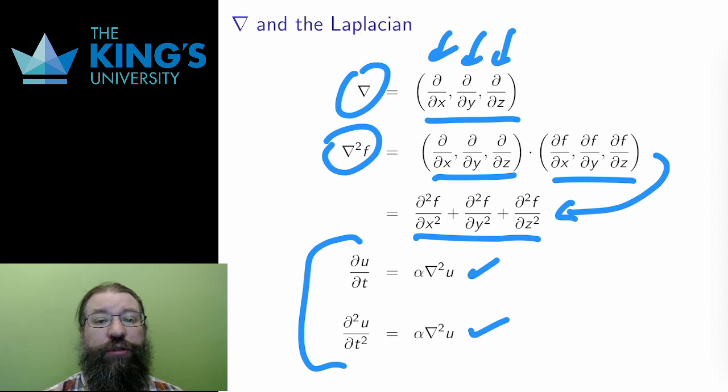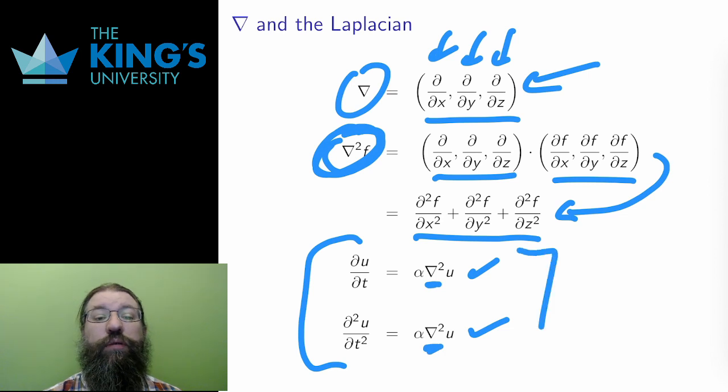I don't need you to immediately understand this, since this is not a course on differential equations, but I wanted to make this connection between the gradient construction, this vector of partial derivatives, the Laplacian, made out of a dot product of this vector, and then some of these extremely important physical processes, like heat flow and wave propagation, that all relate back to these derivative constructions that we're doing in the course in this week.